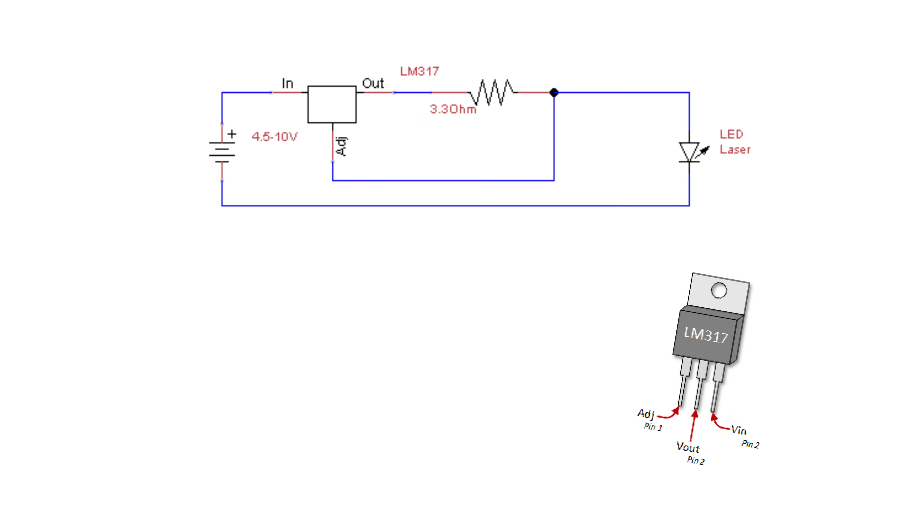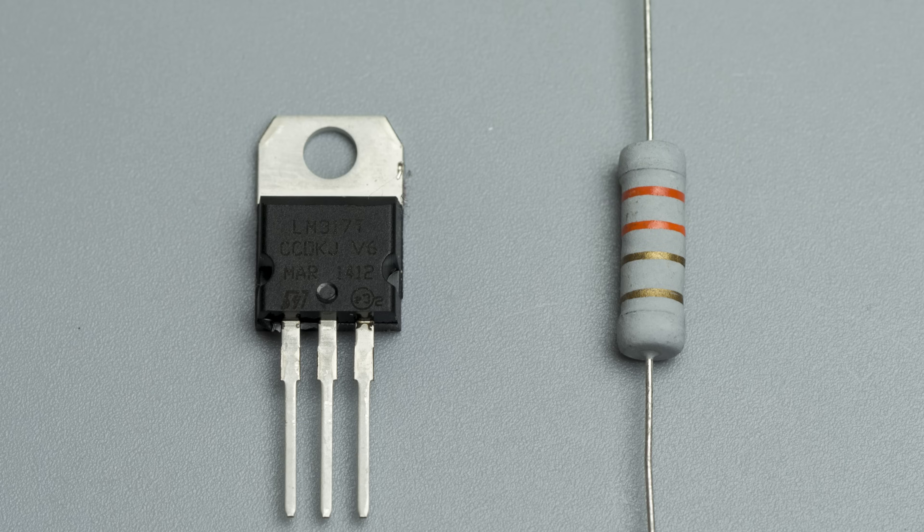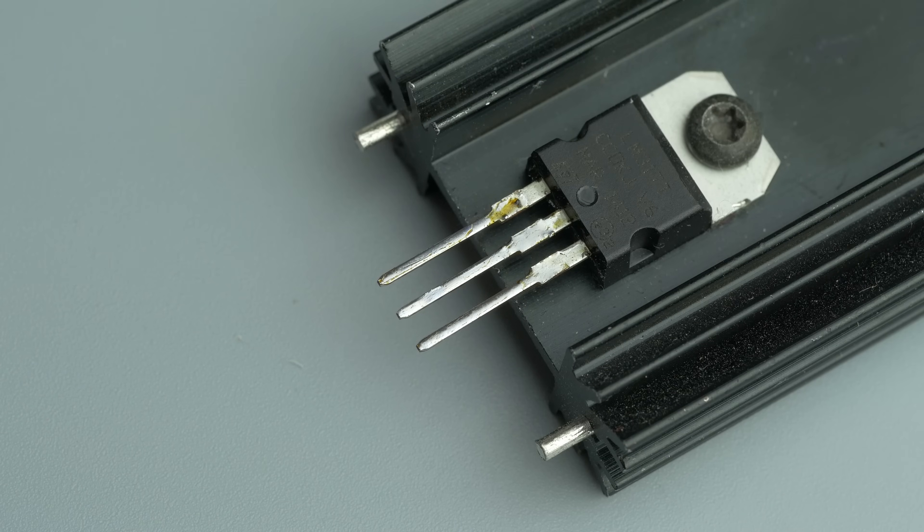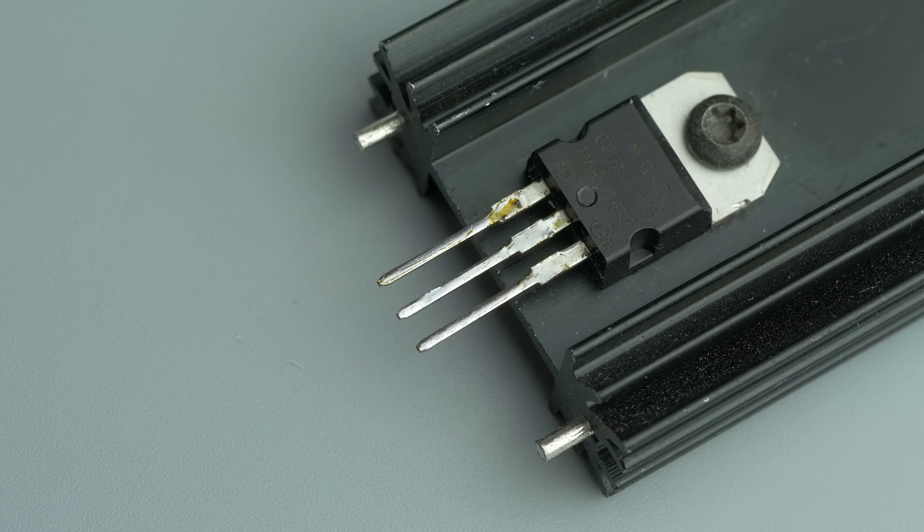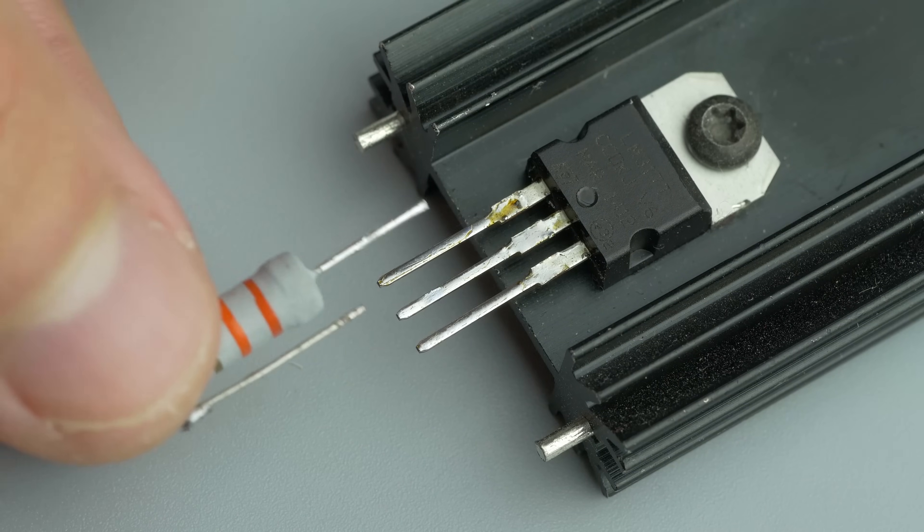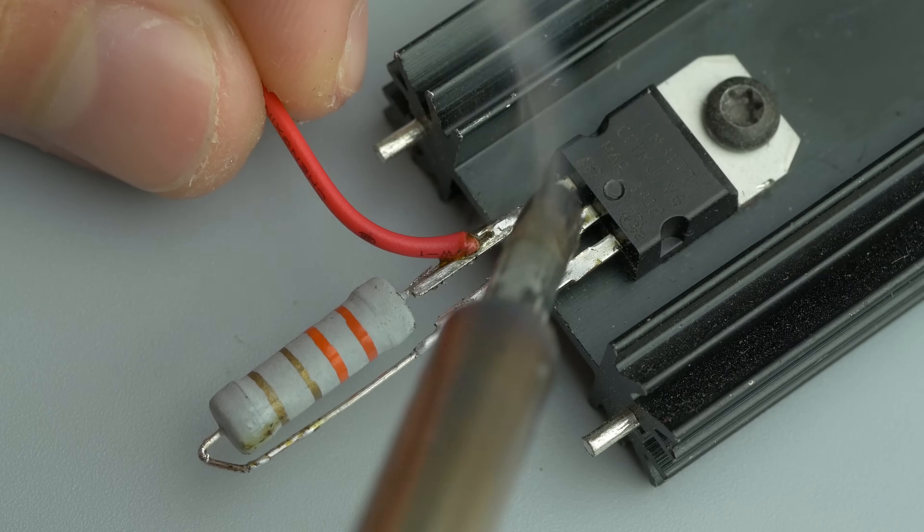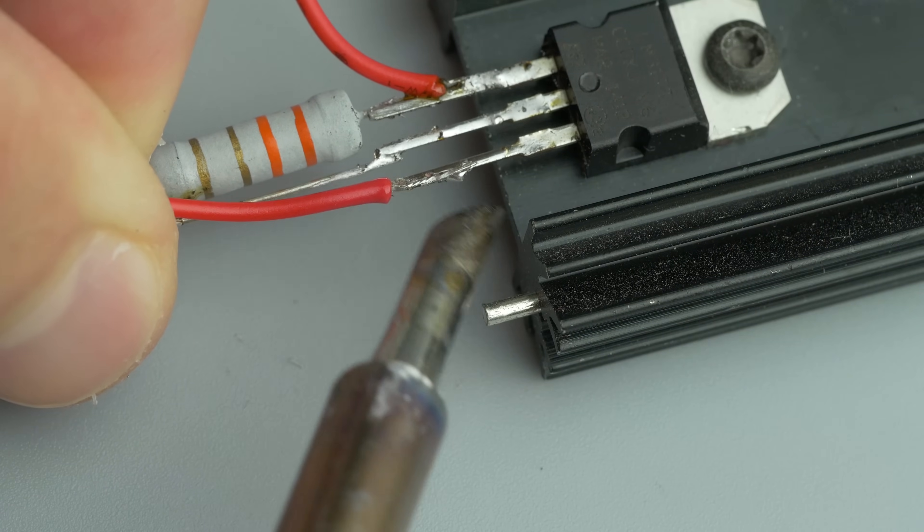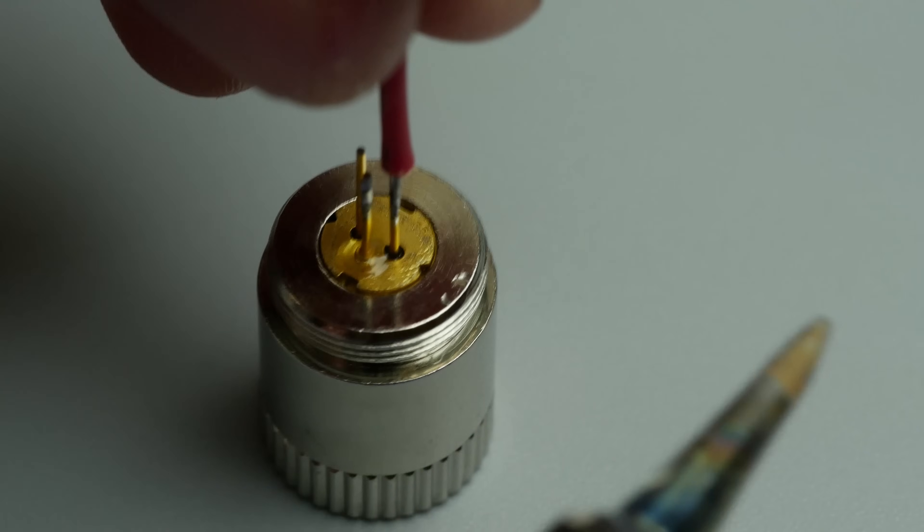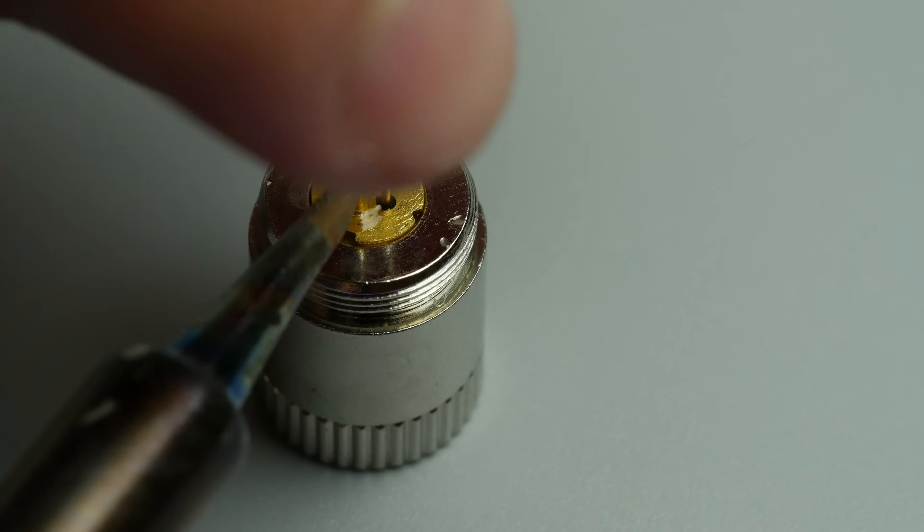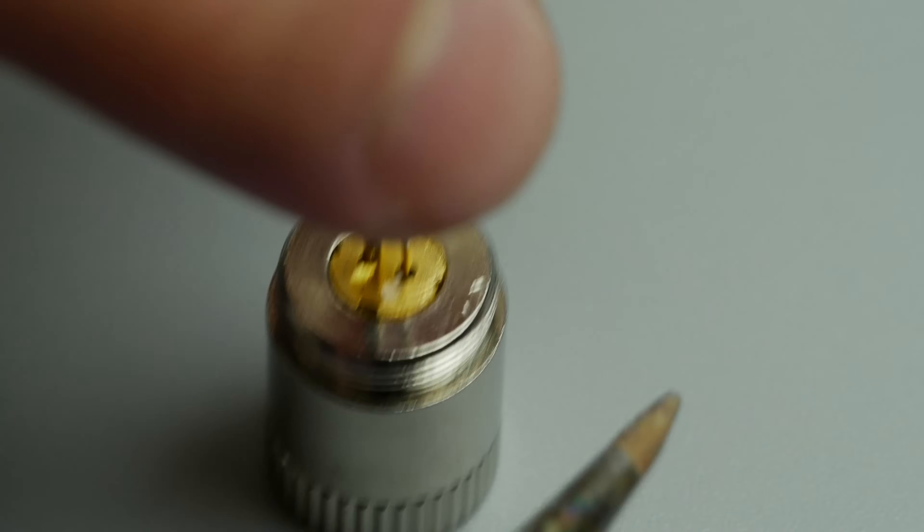So as you can see, there is only 2 components, cheap LM317 and 3.3 ohm resistor. I also used little heatsink, but chip is absolutely cold, so you don't need it. Solder resistor to first 2 LM317 terminals and 2 wires to first and last terminal. First is going to plus of laser diode and third to plus of power supply. Minus is straight from battery to laser.